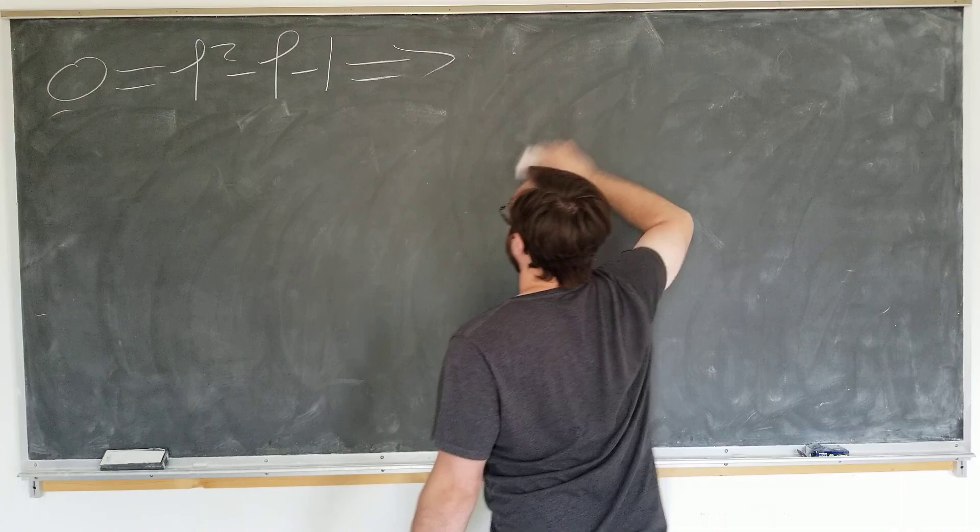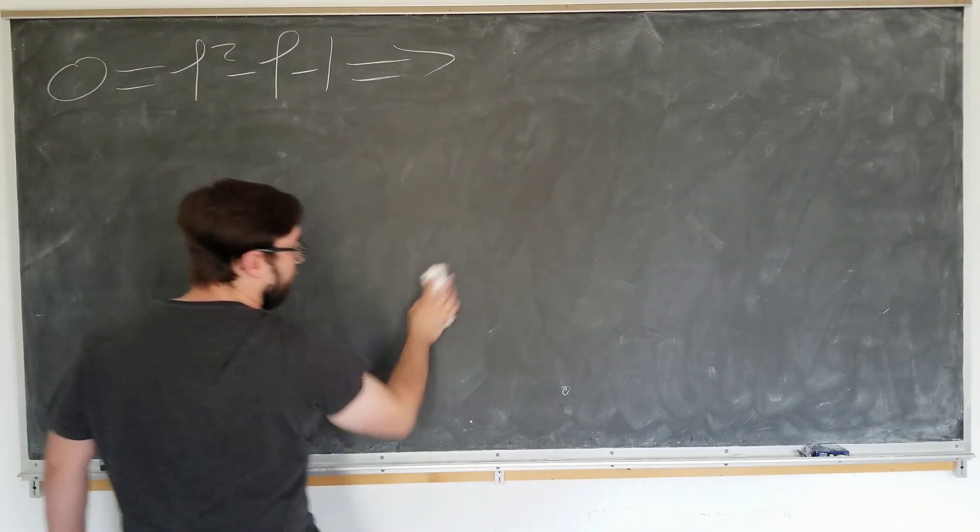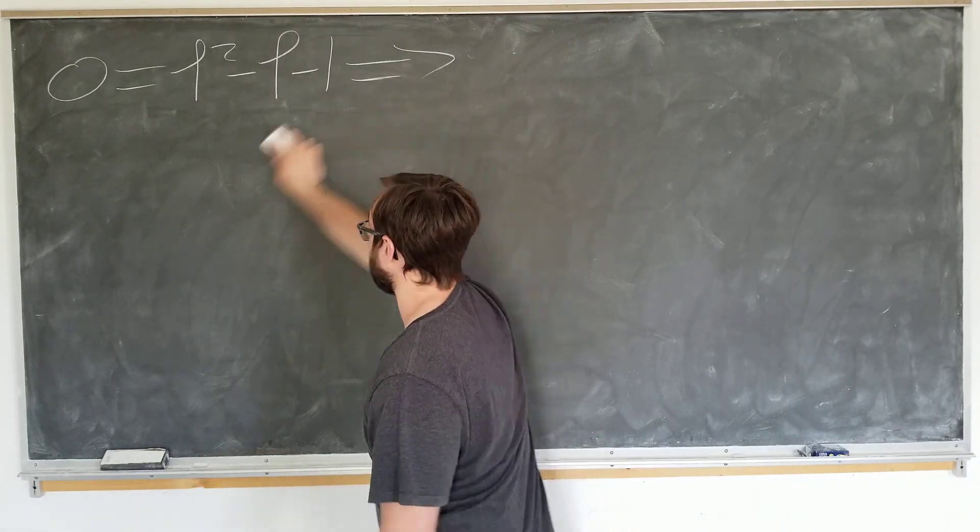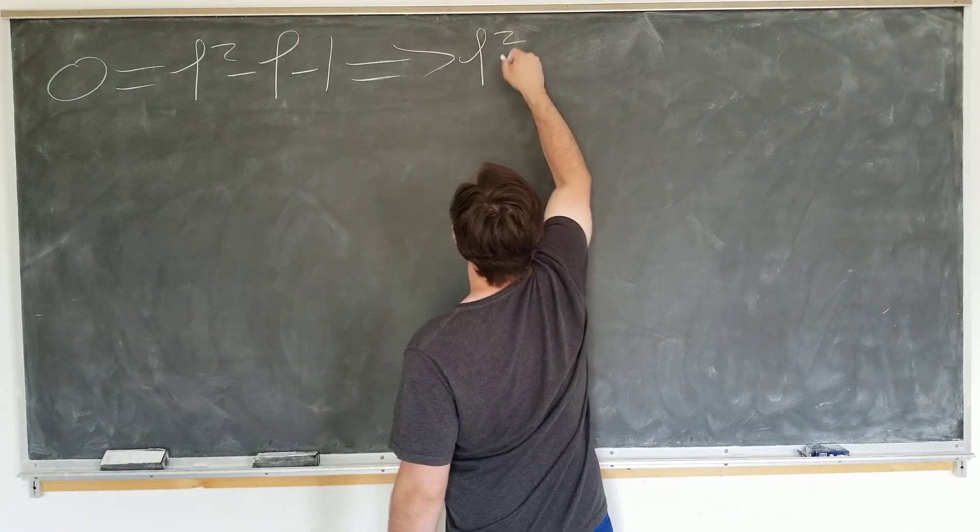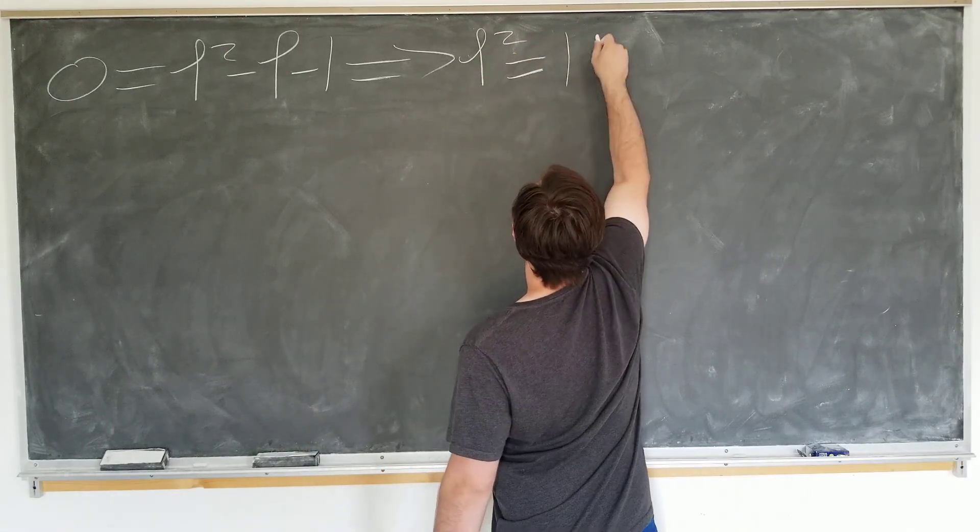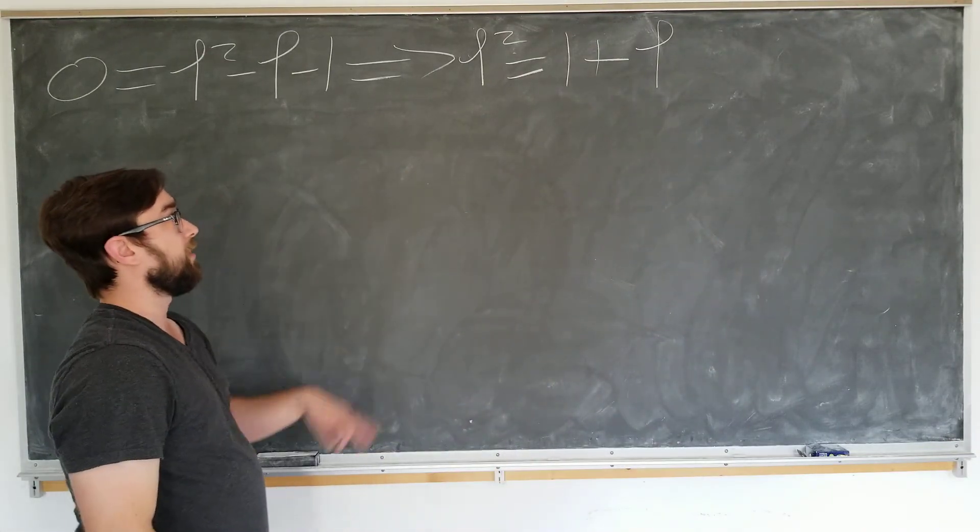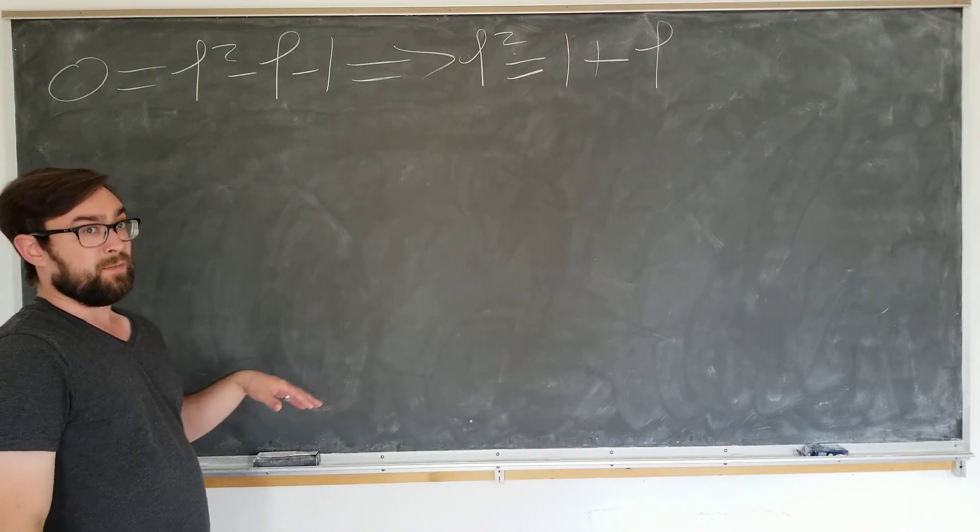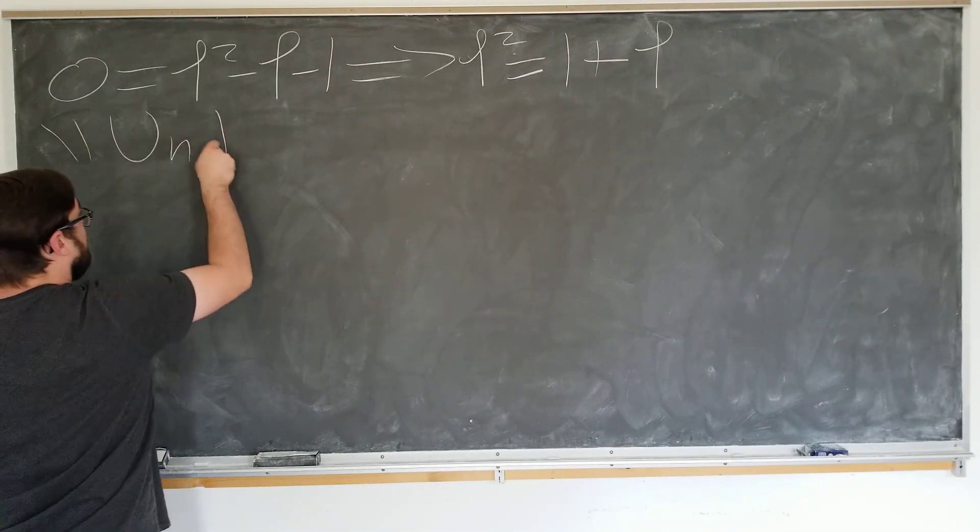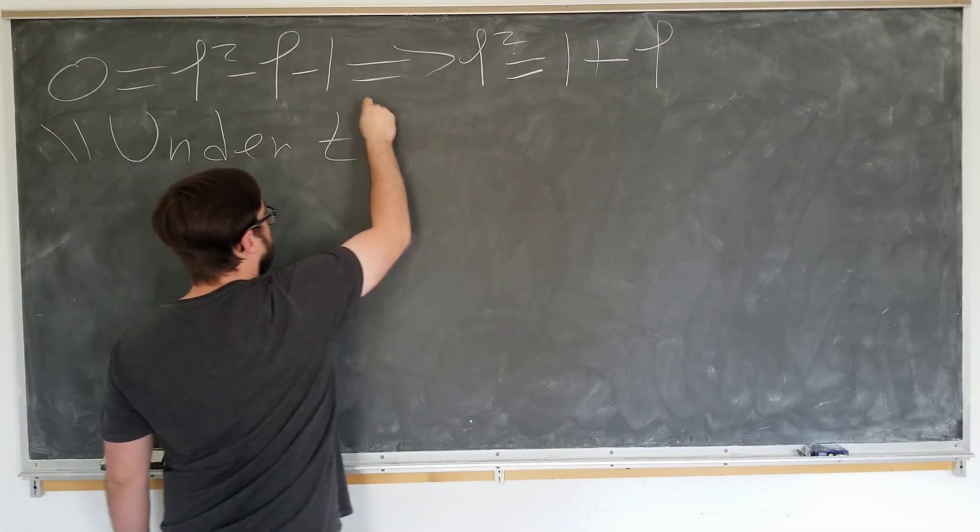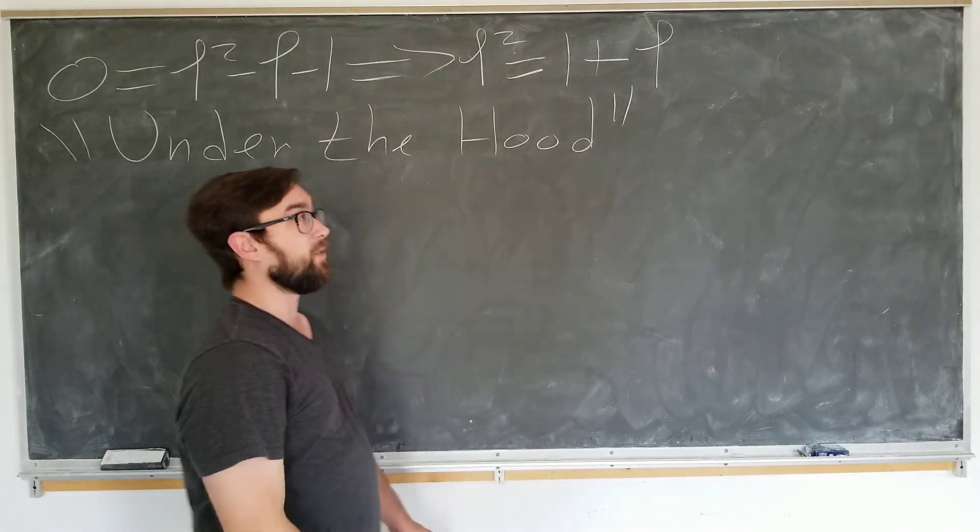Well, let's just go back to our defining property of the golden ratio here. 0 is phi squared minus phi minus 1. Okay, let's go ahead and write it like this. Phi squared equals 1 plus phi. Yeah. And now we're going to do some algebraic manipulations on this to see what we can find out what's happening under the hood, so to speak.